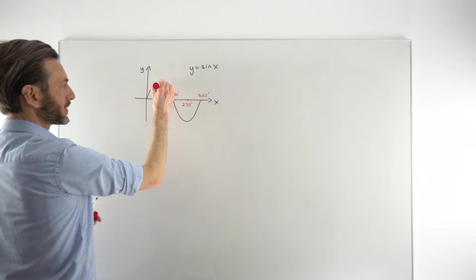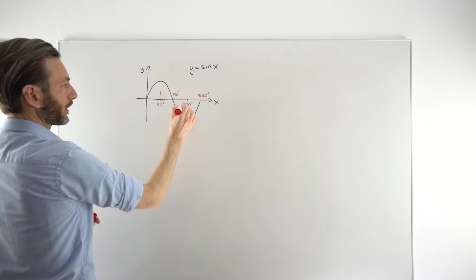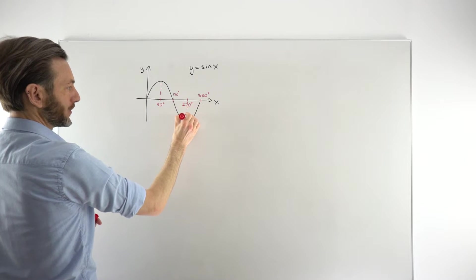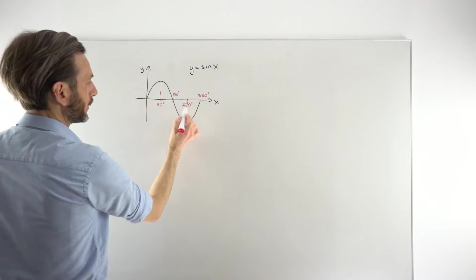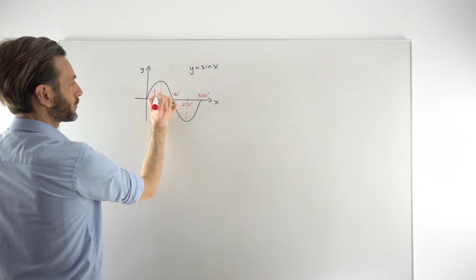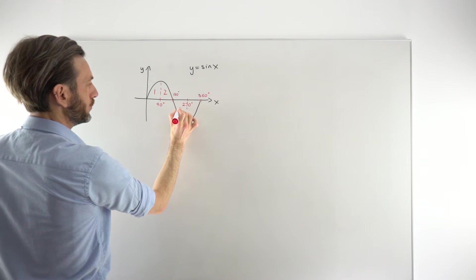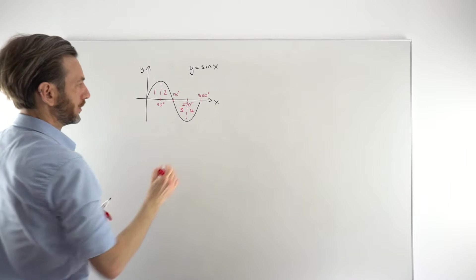What we can do is subdivide the graph based on those 90 degree increments. And we call each of these chunks a quadrant. So this is quadrant 1. This is quadrant 2. Quadrant 3. And quadrant 4.